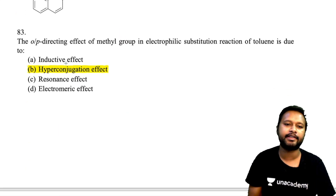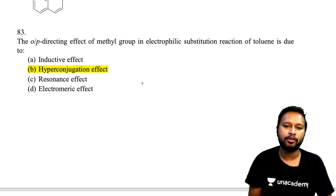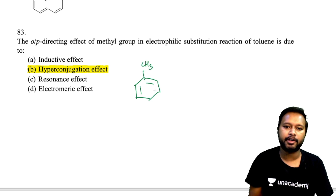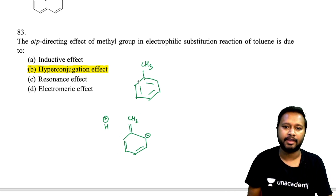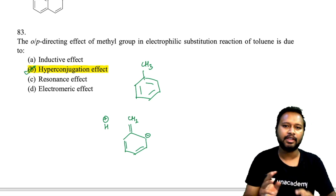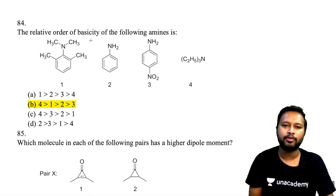The next question asks why the methyl group in toluene shows ortho-para directing in electrophilic substitution. Toluene (C₆H₅CH₃) shows resonance when a hydrogen is removed, forming CH₂ with a double bond, showing negative charge distribution at ortho and para positions. This ortho-para effect is due to hyperconjugation — a class 12 organic chemistry concept.